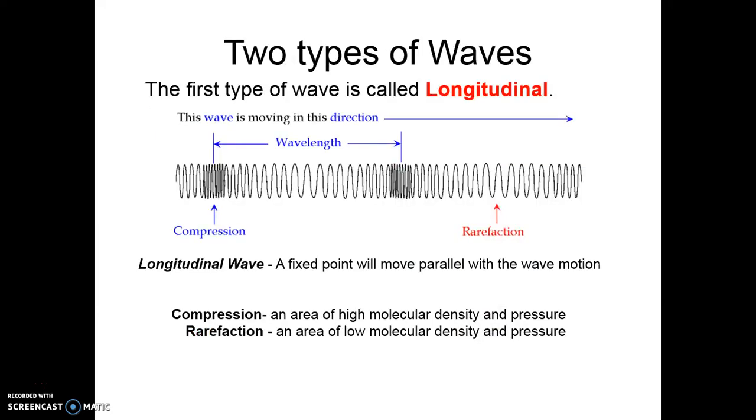So the first of our two different types of waves, longitudinal, so these are also sometimes called compression waves. So in here we have a spring, for my little picture here, or my particles, that are moving horizontally, so they're moving left to right.